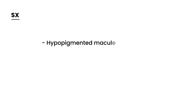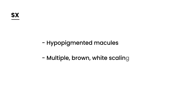I'll show you a picture, but first I wanted to describe what it looks like. Basically, you have these hypopigmented macules — multiple in number — and they're either brown or they can be white as well. It depends on the person's skin color. These lesions can appear as patches and can be on either the face or the body.